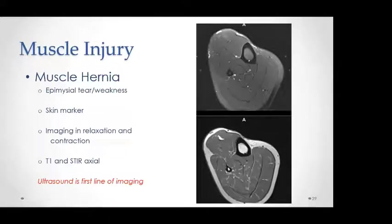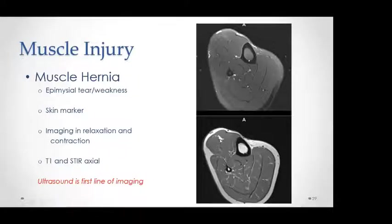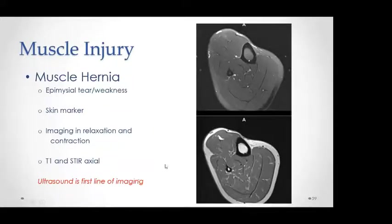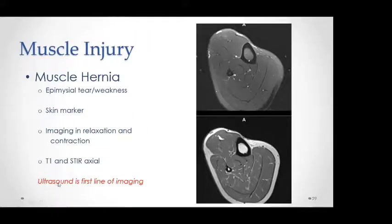Another pattern is muscle hernia, which happens due to tears involving the epimysium surrounding the muscle. We see muscle hernia involving the extensor compartment of the leg. When doing the MRI scan for suspected muscle hernia, we perform imaging in both contraction and relaxation phases and compare the muscle on both phases. I personally prefer ultrasound for these patients with dynamic examination, but sometimes they are referred for MRI to rule out a soft tissue tumor.